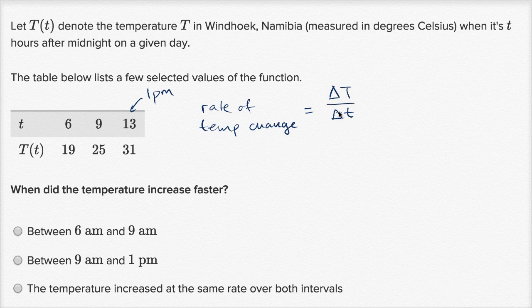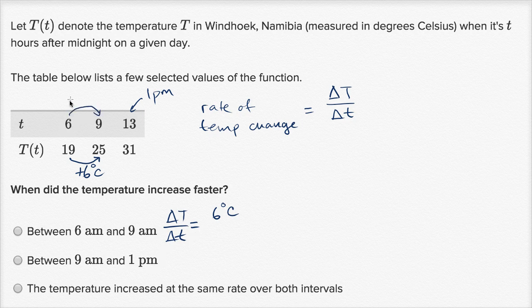Let's think about what this rate of temperature change is between these different intervals. Between 6 a.m. and 9 a.m., change in temperature over change in time. Our temperature went up by 6 degrees Celsius, and our time went up by 3 hours.